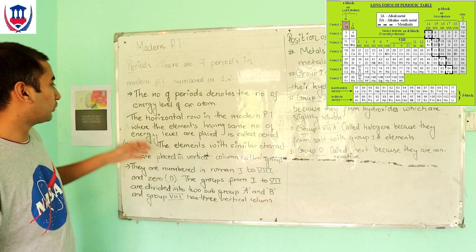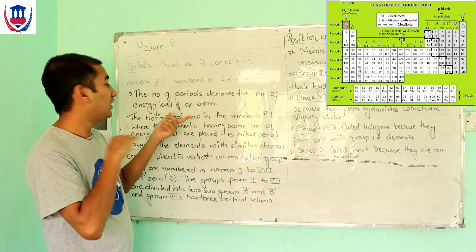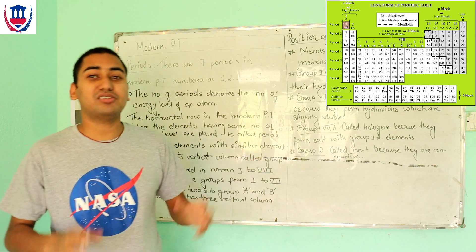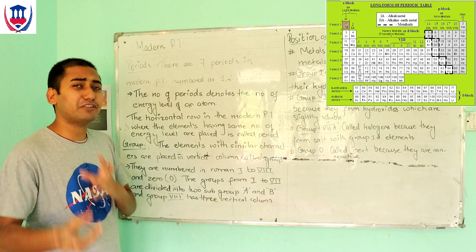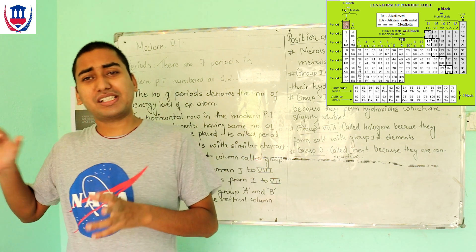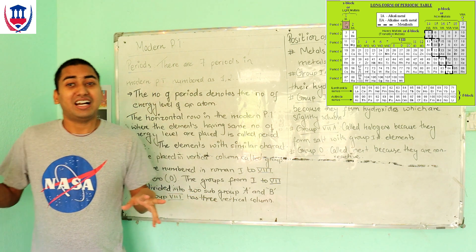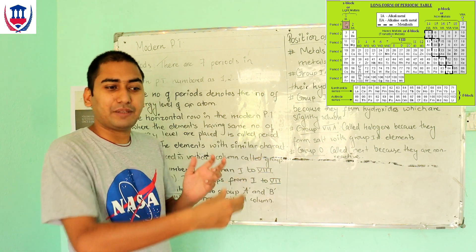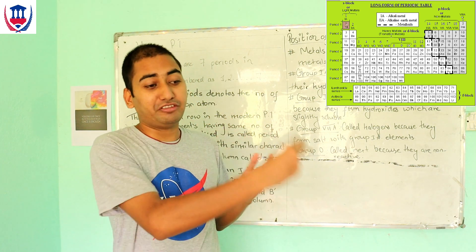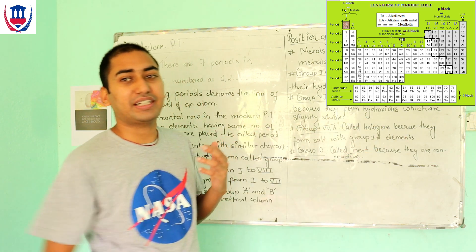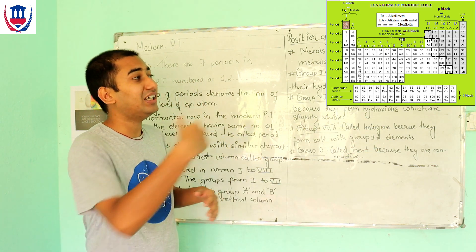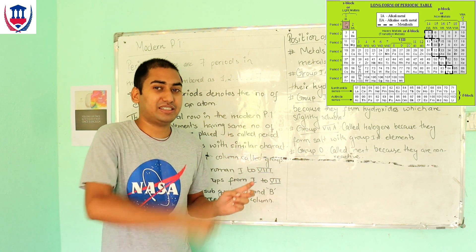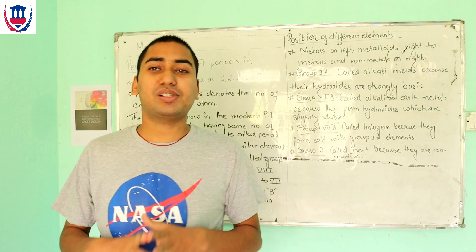So what is a Period? A horizontal row where elements have the same highest number of energy levels. The characteristics change across the period — from highly reactive metals, to less reactive metals, to less reactive non-metals, to highly reactive non-metals, and finally to inert gases. Gradually the characteristics change while the energy level remains the same.